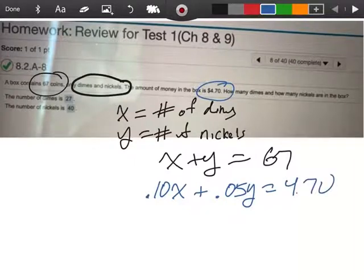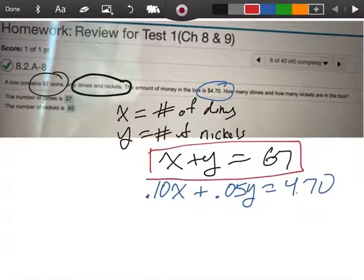So what I'm going to do, guys, is I'm going to take this top equation right here. And I'm going to solve it either for x, or I'm going to solve it for y. It doesn't really make any difference. I'll tell you what, let's solve it for y. So if I solve it for y, I'm going to move that x over there. And I'm going to end up with y equals 67 minus x.